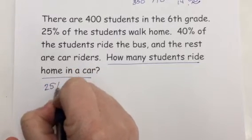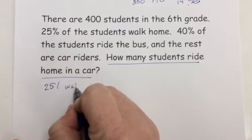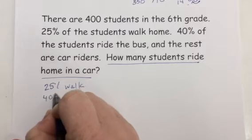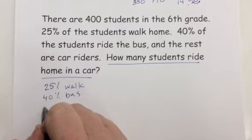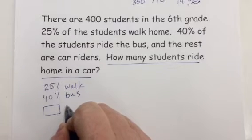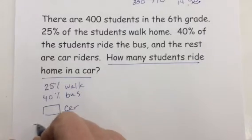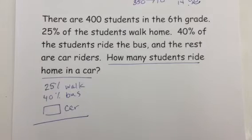So we're gonna say 25% walk, 40% ride the bus, and all the rest take a car home. Well all together they have to add up to a certain percentage. Think about what percentage means one whole.